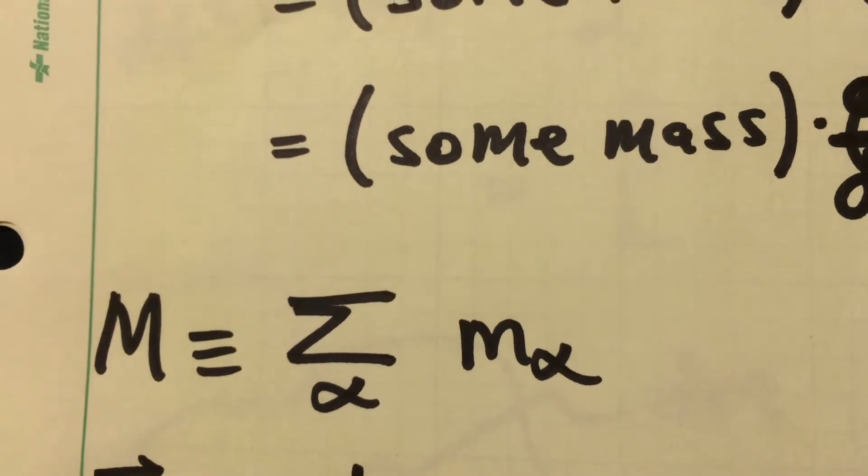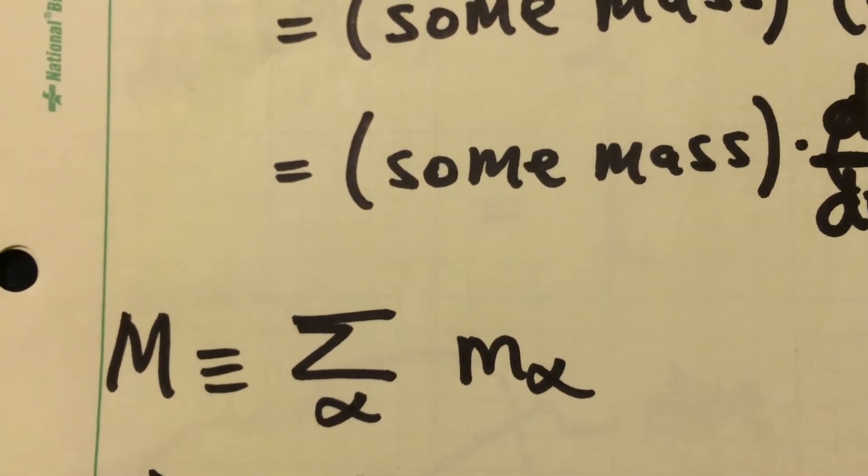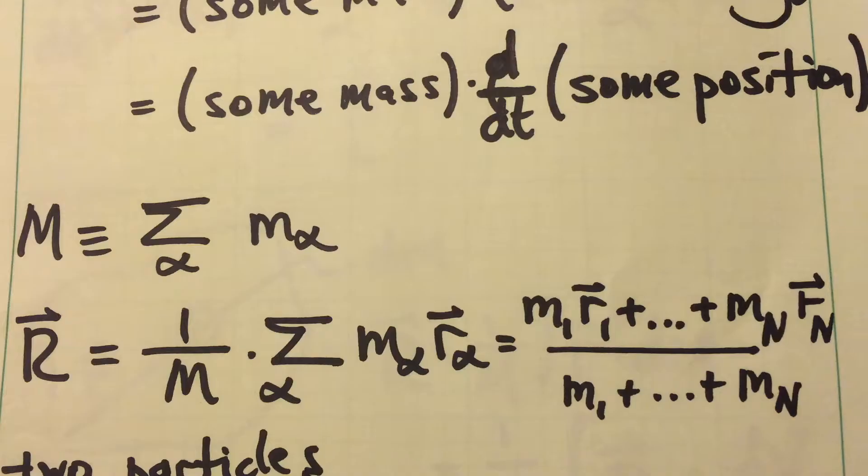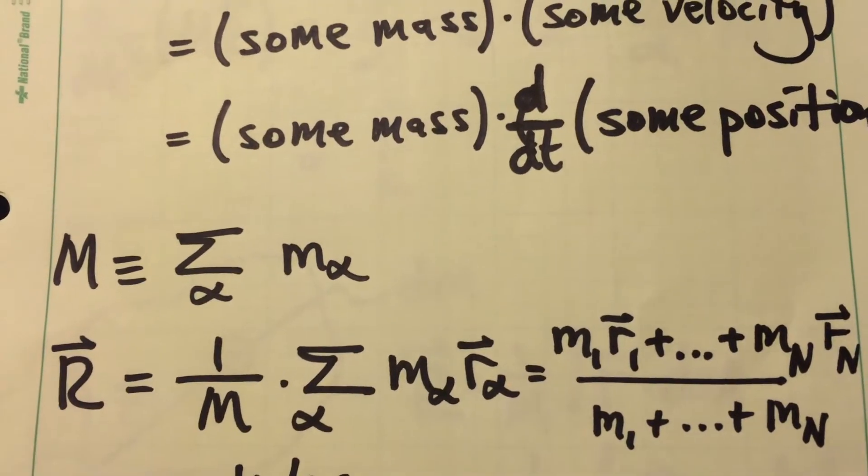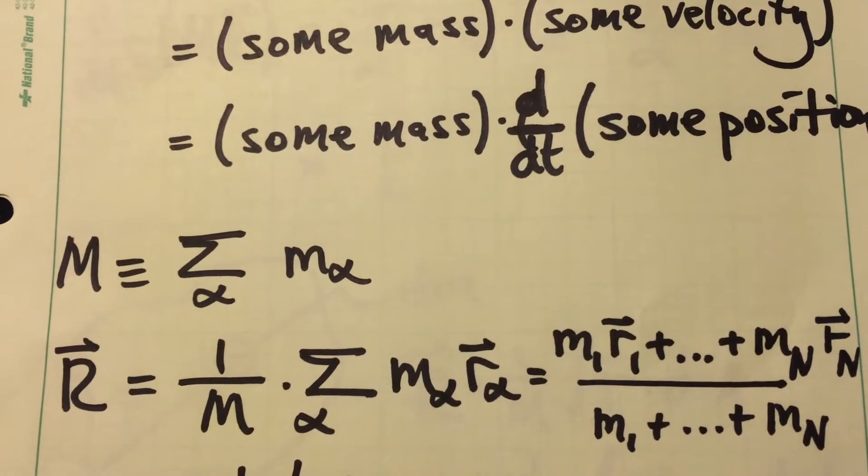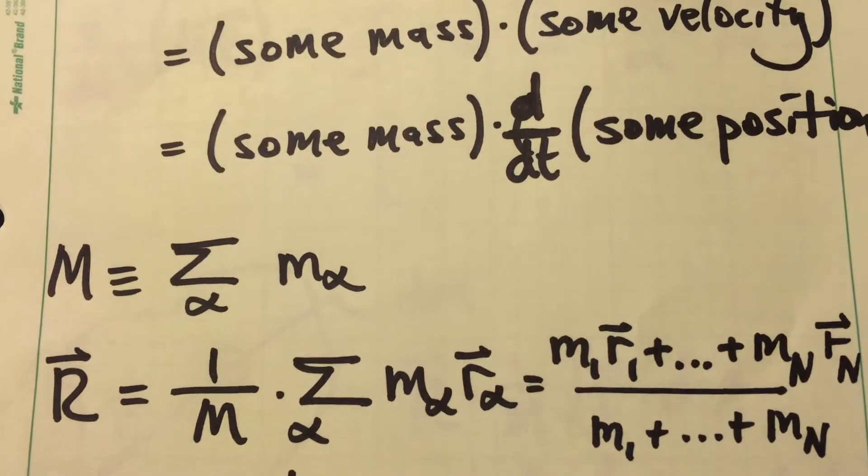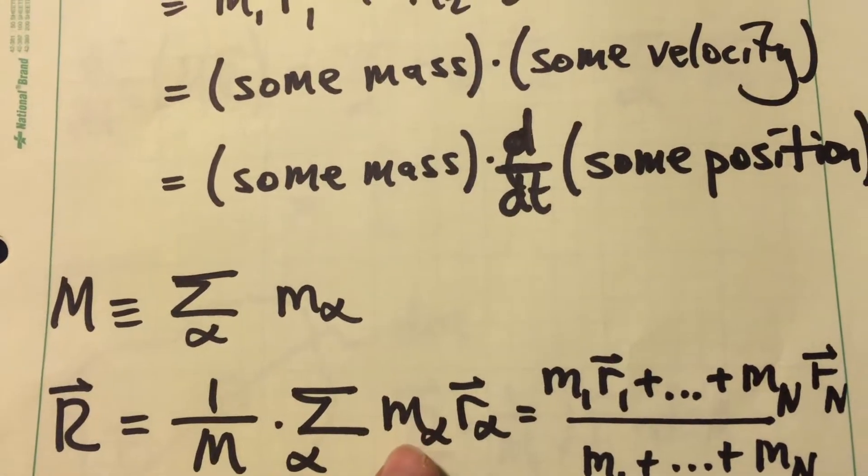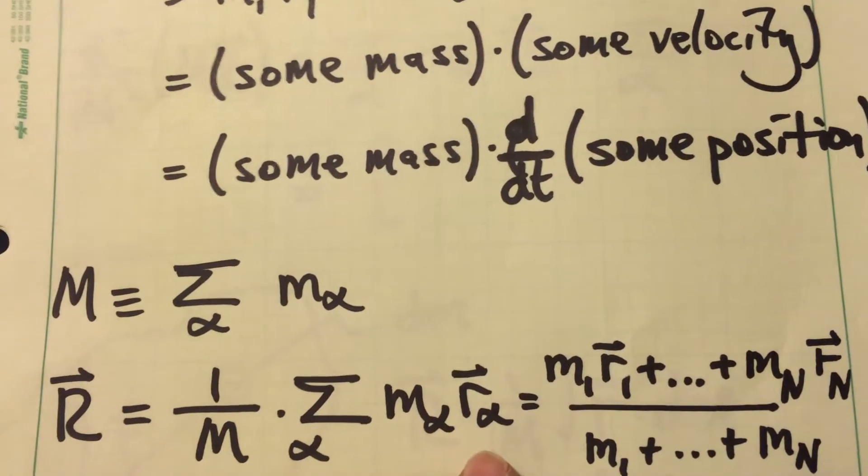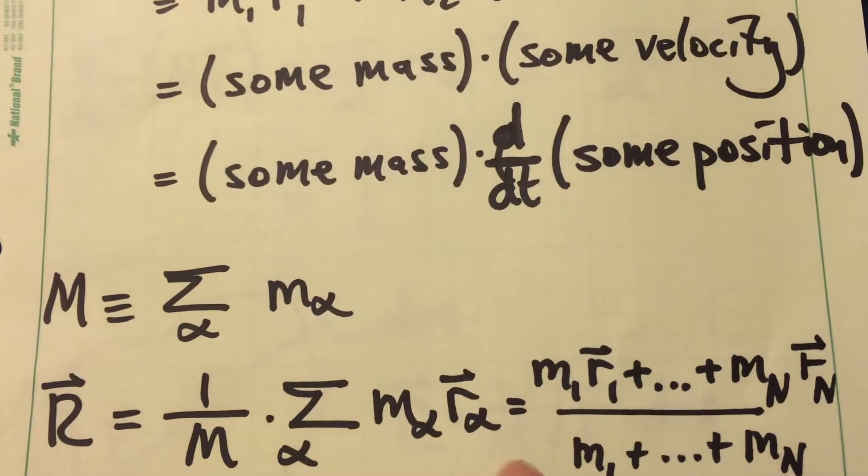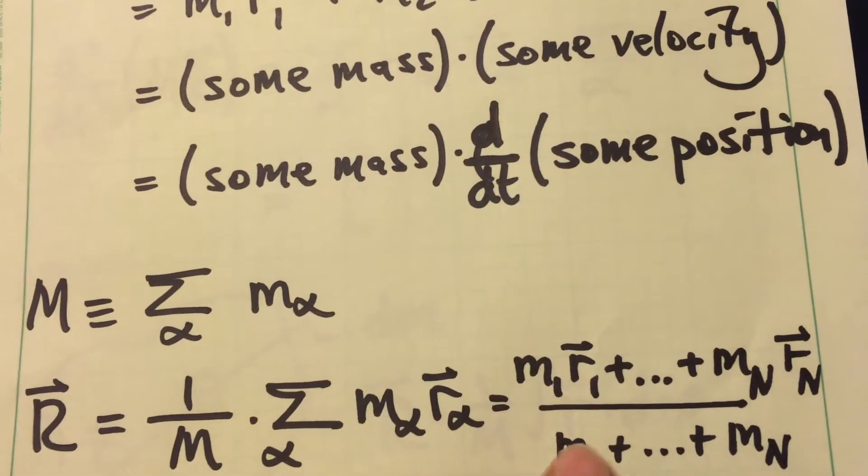First, define the total mass of the system to be the sum of the masses for all the particles. So the system's mass is just the total mass of all the particles. And then we can define a position, capital R, to be 1 over that total mass times the sum of the mass of each particle times its position. Or if we had a system of capital N particles, this sum would look like this on this top line. And then we divide it through by the sum of all the particle masses.